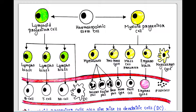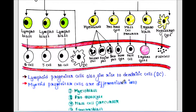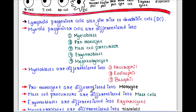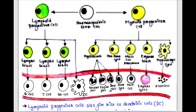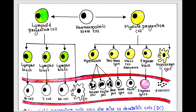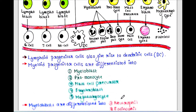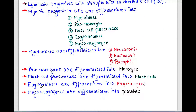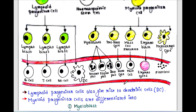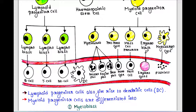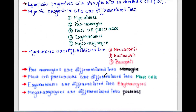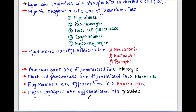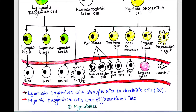Promonocytes are differentiated into monocytes. Mast cell precursors are differentiated into mast cells. Erythroblasts are differentiated into erythrocytes. Megakaryocytes are differentiated into platelets.